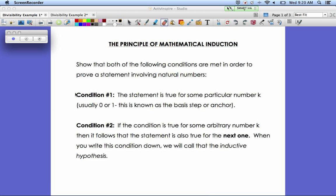Condition 1 being that we have to show that the statement is true for some particular number, and usually that is n equals 1. We'll call that the anchor or the base case. And condition 2 will show that if it is true for some number k, then it follows that the statement is also true for the next one, k plus 1.